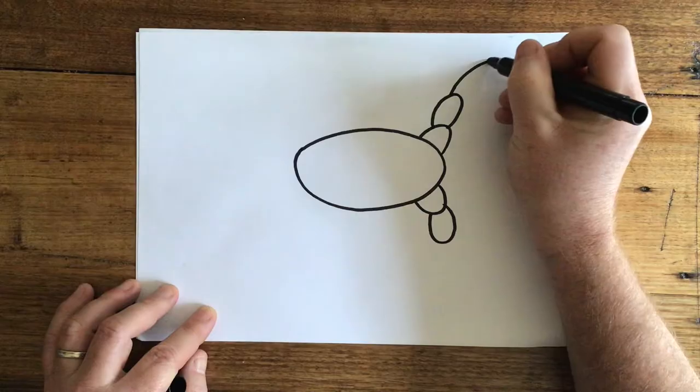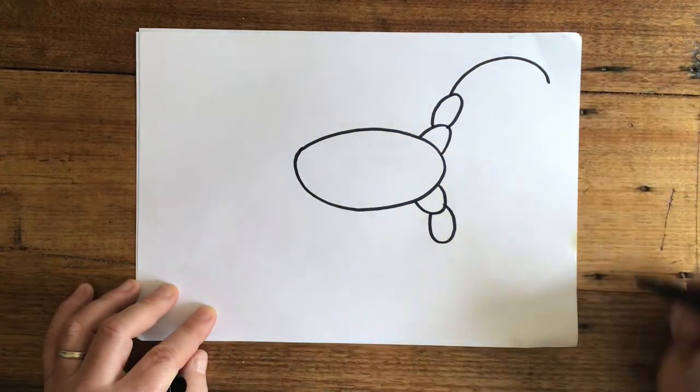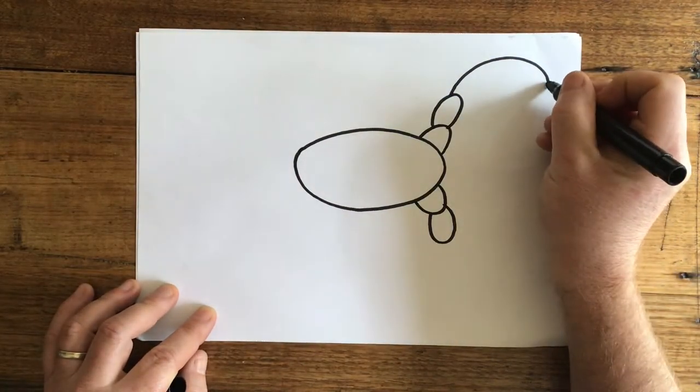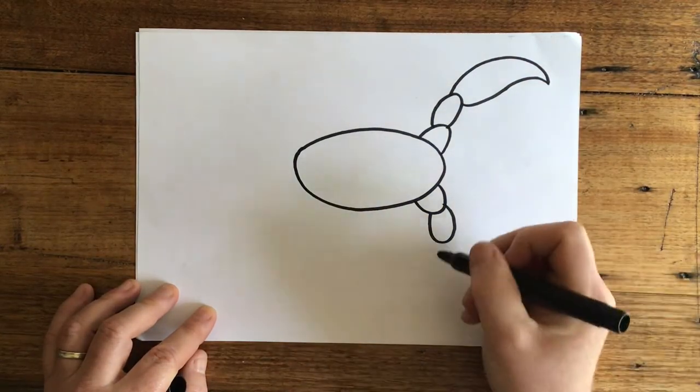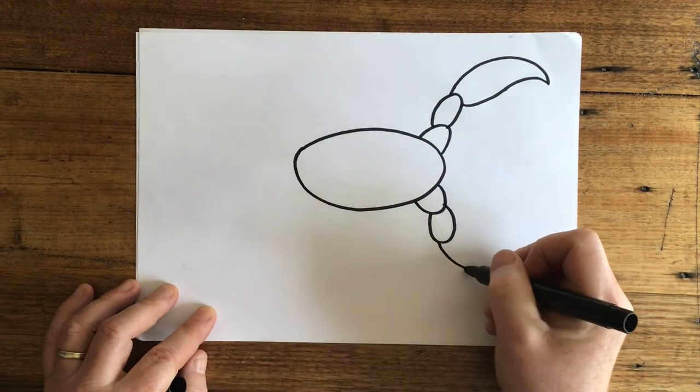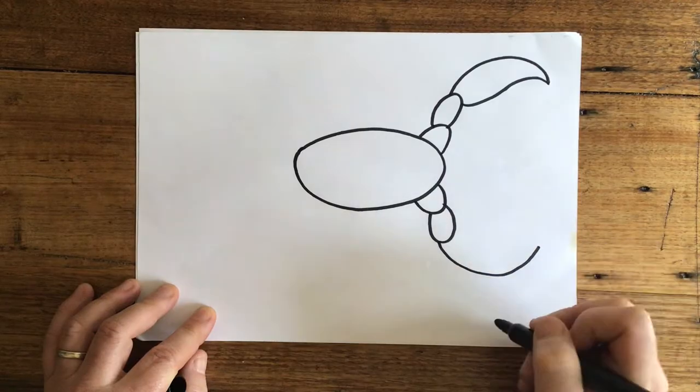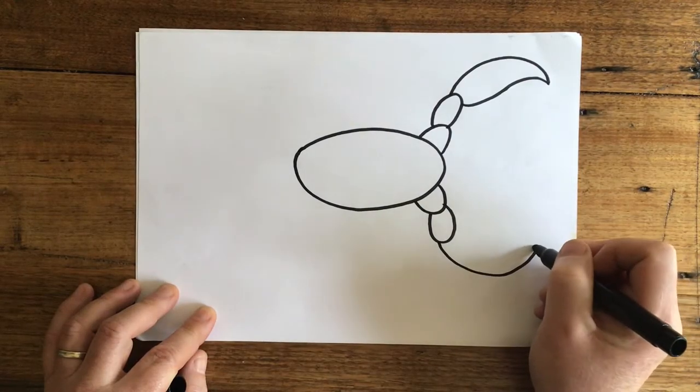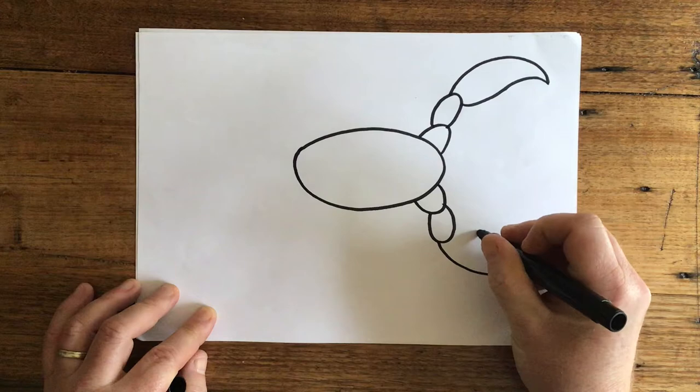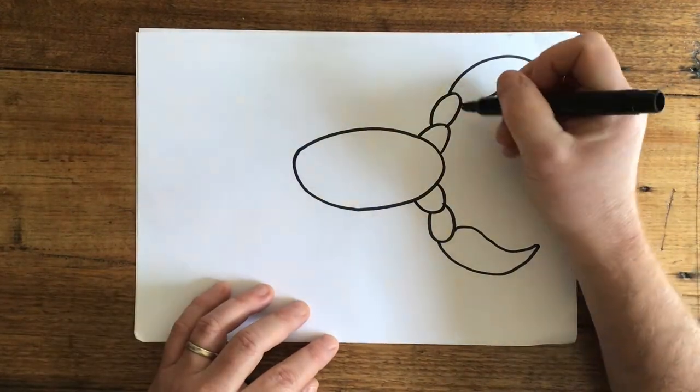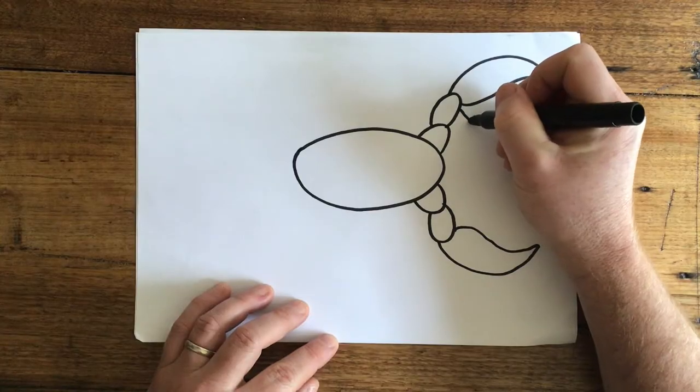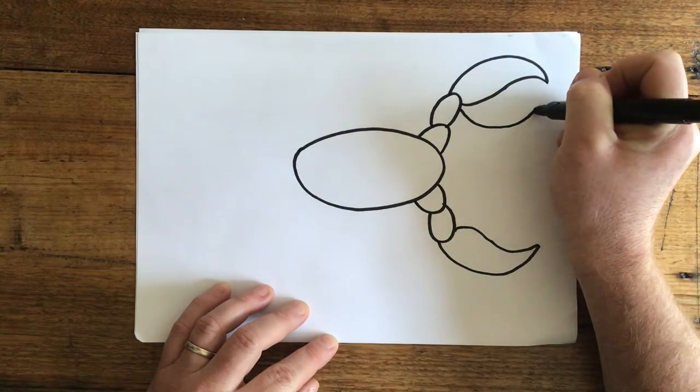Now let's do a big long curve like this and we're going to curl it back like that. Let's try the same on the other side and come to a point and bring it back and curl it back in like this. Try and keep them the same. Now we're going to come in here and do another curve like this.